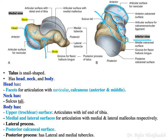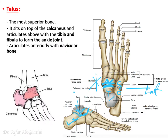The talus articulates superiorly with the calcaneus inferiorly. There is a groove created by the talus and another groove created by the calcaneus, and together they form a canal or sinus — a tunnel for blood vessels, ligaments, and nerves. This tunnel is the tarsal sinus, formed by the sulcus from the talus and a corresponding sulcus from the calcaneus.